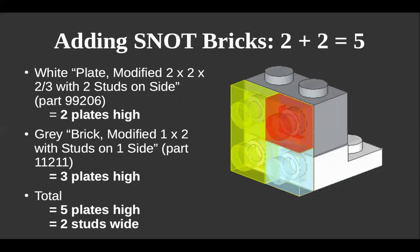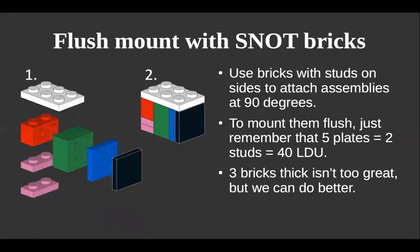If you stack a plate with studs on the side and a brick with studs on the side, those studs will align, making a total height of five plates — 40 LDU. If you place something across their face, they will connect, as you see here with this transparent yellow plate. Another way to mount things flush would be to make your wall three studs thick and include a brick and a plate along with the tile — this works, but it's not ideal.